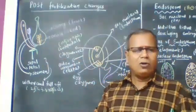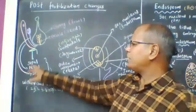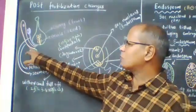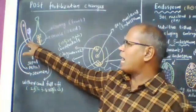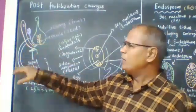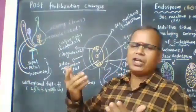What will happen to the calyx, corolla and androecium after fertilization?